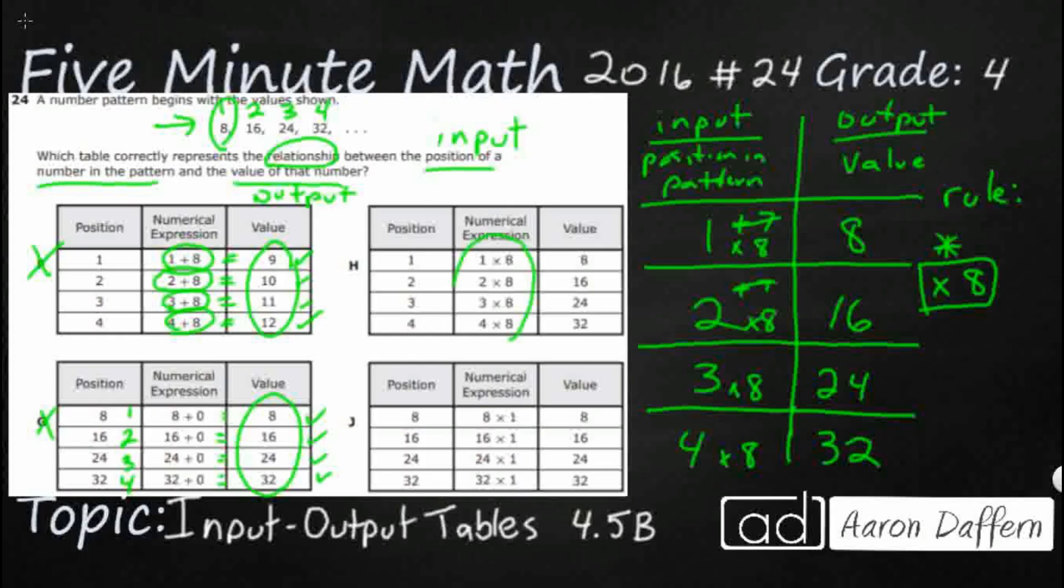H. So that looks familiar. Look at that, we've got times 8. So we know that's what we did. Let's just check our J. And once again, the positions are all wrong on J. So our answer here is going to be H.